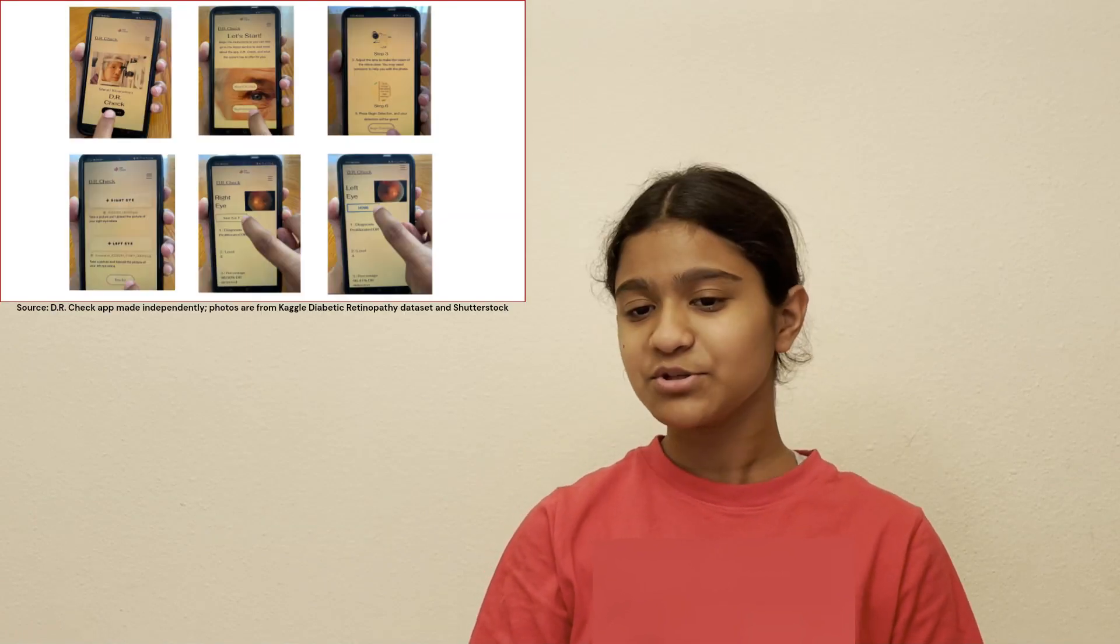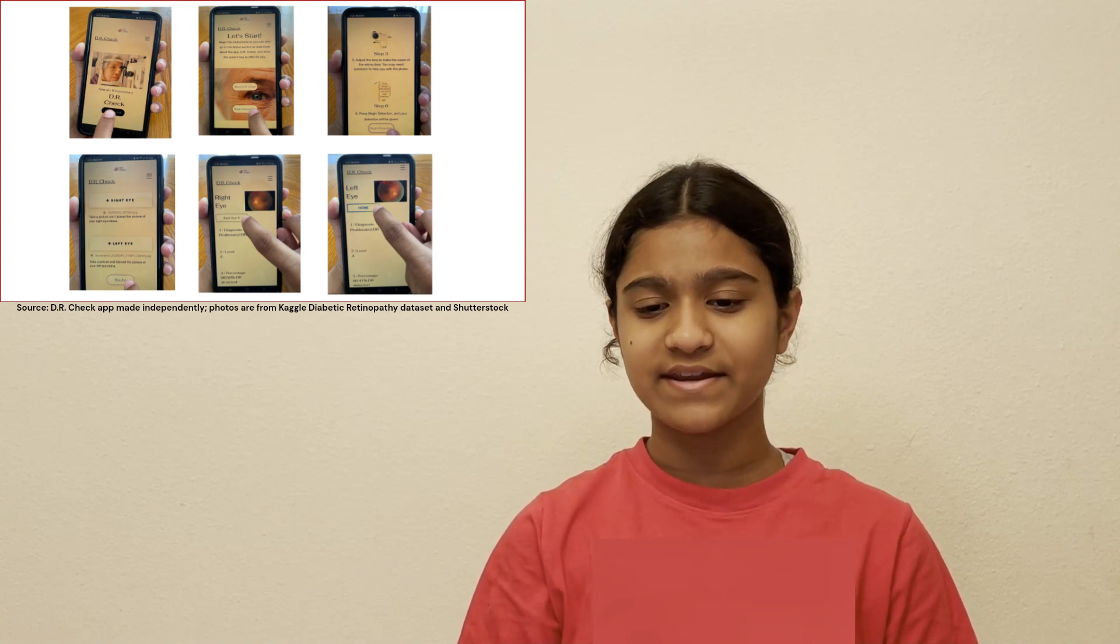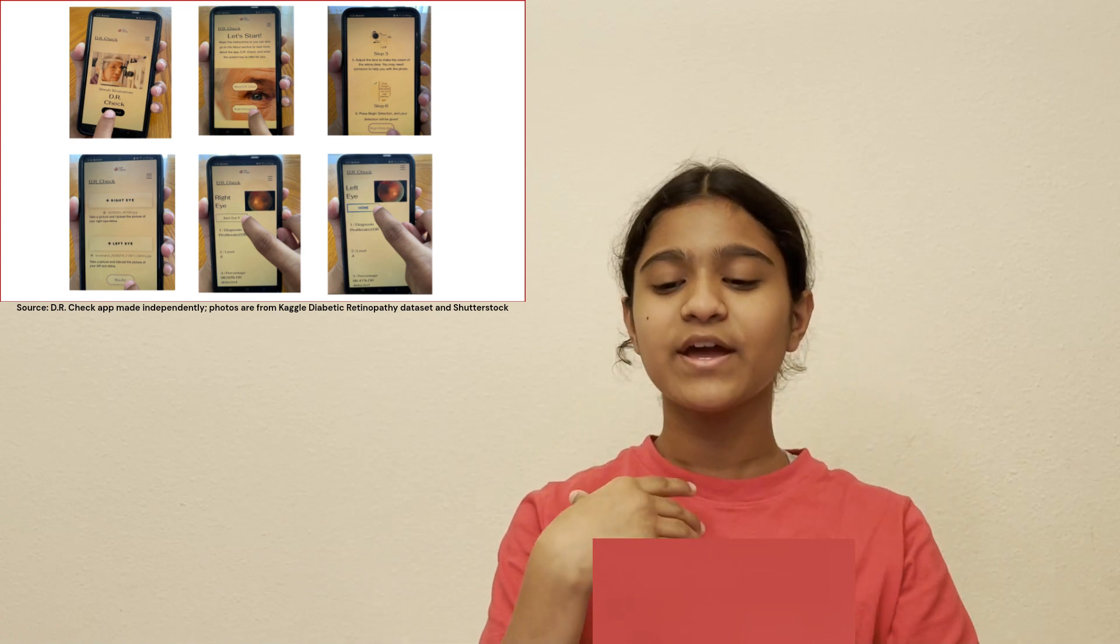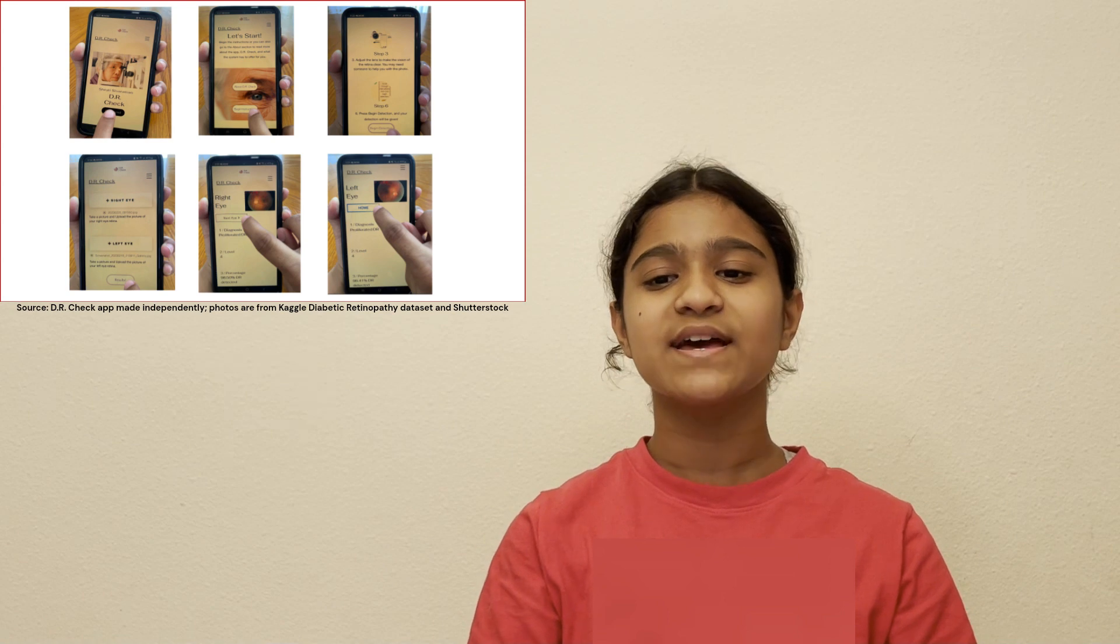Next, I implemented a front-end website that can be used either on a phone or a computer with a camera. The program requests to take an image of the eye, and this must be done using a condensing lens between the eye and the camera. The app immediately detects the eye image as having DR or not.